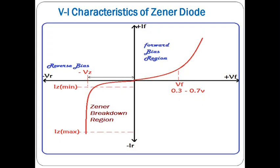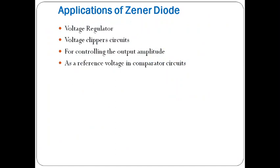The main applications of the p-n junction diode are rectifiers, clippers, and clampers circuits. A rectifier converts alternating voltage or current to direct voltage or current — it converts AC to DC. Clippers and clampers are linear wave-shaping circuits.